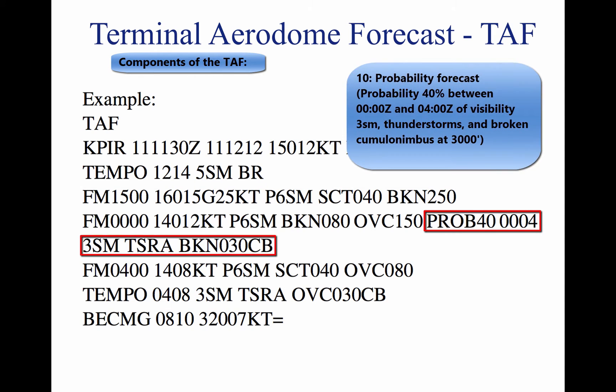10. Probability forecast. A given percentage that describes the probability of thunderstorms and precipitation occurring in the coming hours. This forecast is not used for the first six hours of the 24-hour forecast.